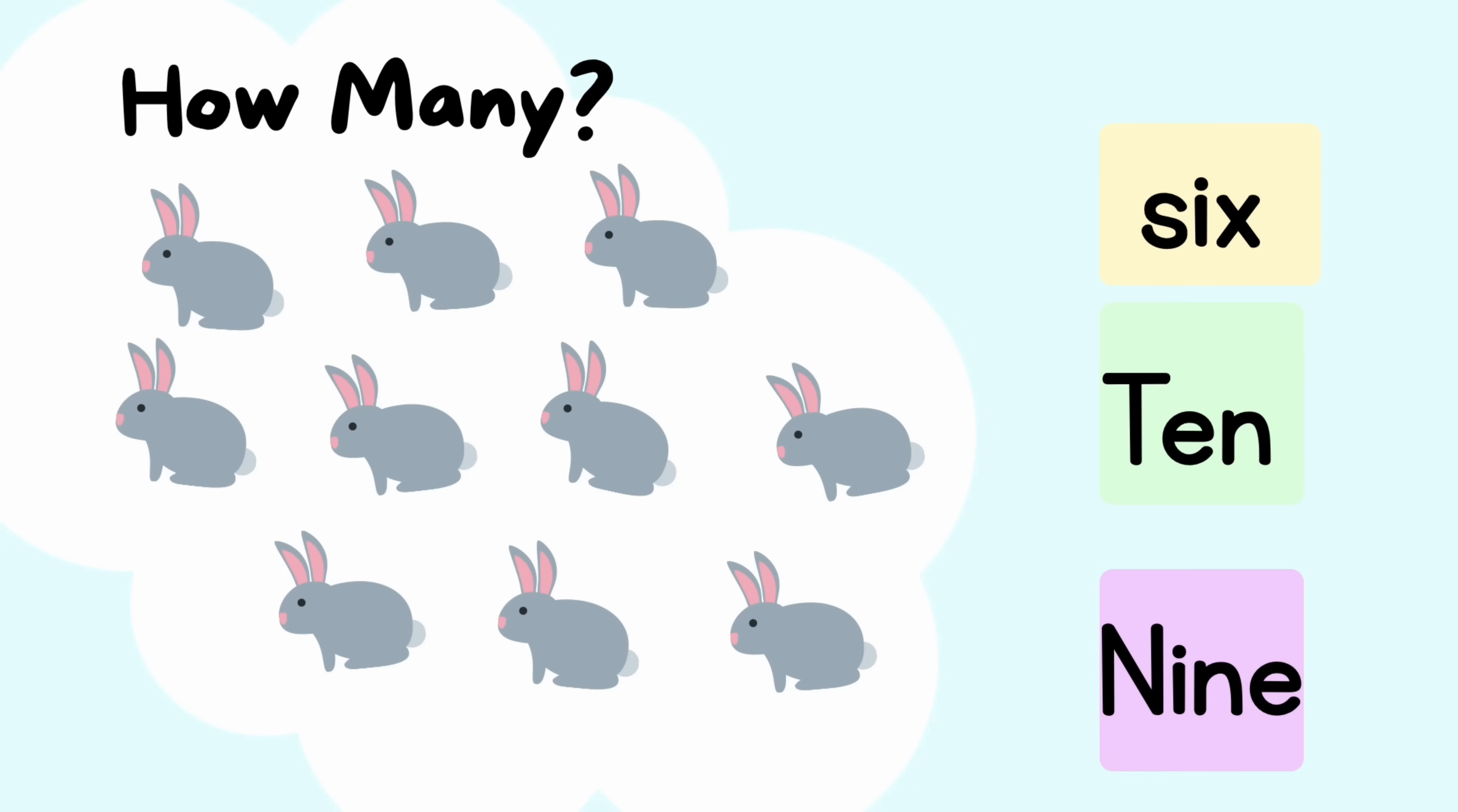Count the rabbits and pick the correct number name. Let's count the rabbits together: one, two, three, four, five, six, seven, eight, nine, ten. T-E-N is the correct number name for ten.